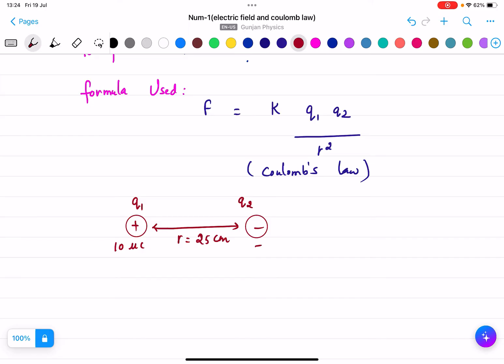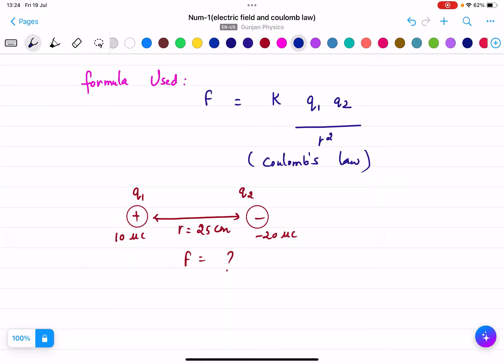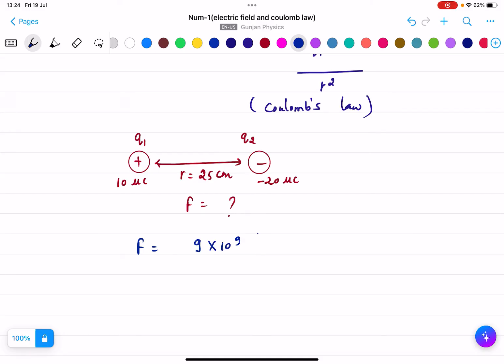We will directly put the values. F = k, where k is 9 × 10⁹ newton meter squared per coulomb squared. Then q₁ is 10 × 10⁻⁶ coulombs, and q₂ is 20 × 10⁻⁶ coulombs.